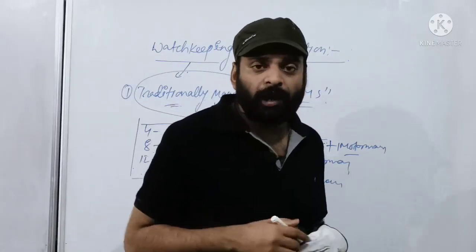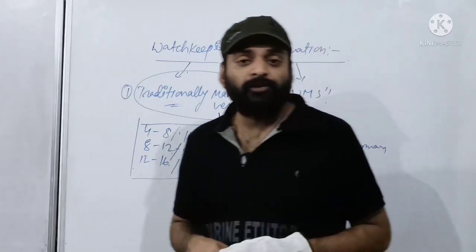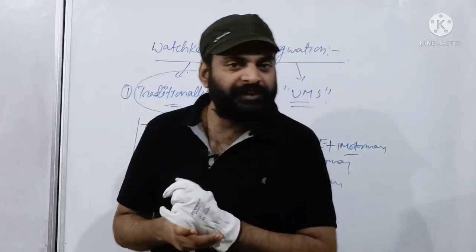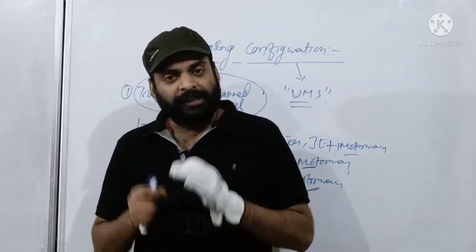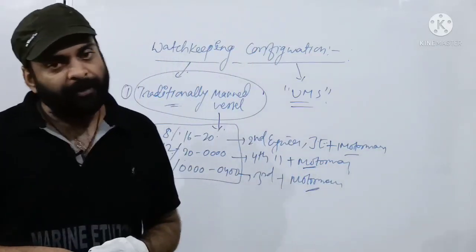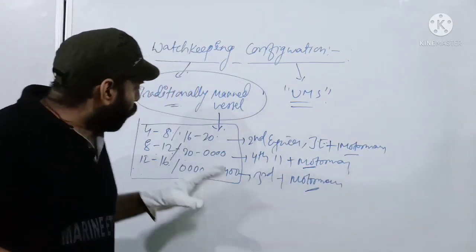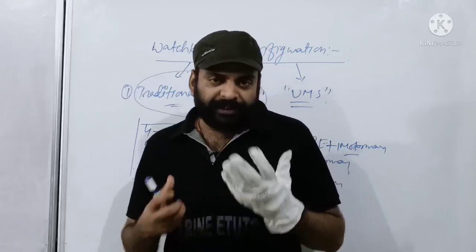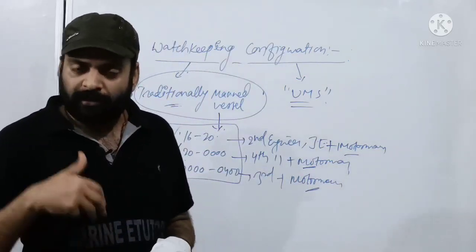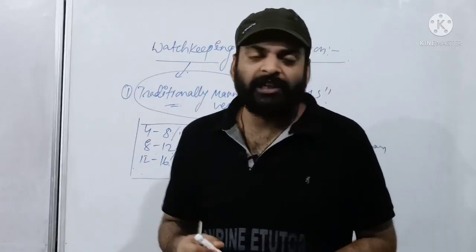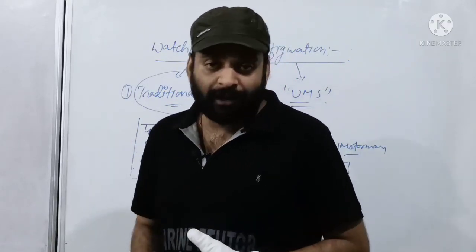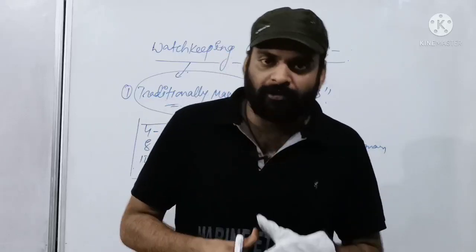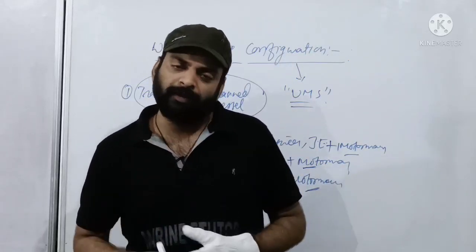However, suppose the ship is only at port, or passing through a canal or channel — then in watchkeeping, the chief engineer along with the electrical officer is also present. This watchkeeping configuration is decided in a toolbox meeting. The second engineer in charge allocates different competent engineers to different positions and work in a rotating manner. I will cover toolbox meetings in detail in a separate video in this lecture series.